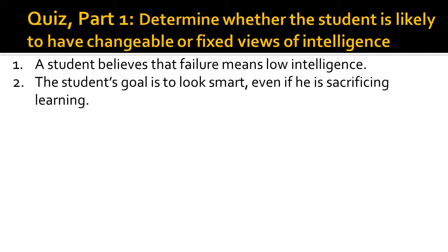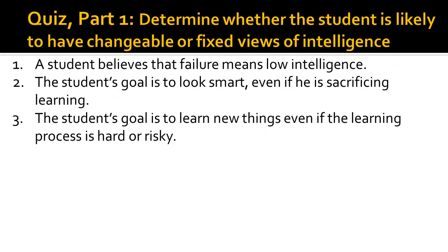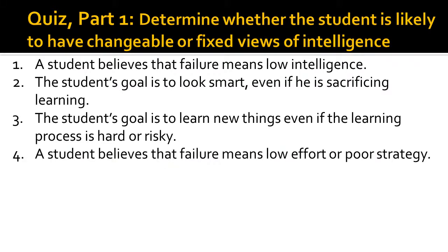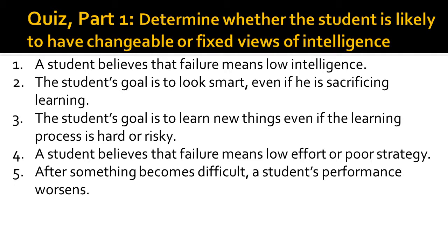Number two: the student's goal is to learn new things even if the learning process is hard or risky. Number four: a student believes that failure means low effort or poor strategy. Number five: after something becomes difficult, a student's performance worsens. Pause the video if you need more time to write down your answers.